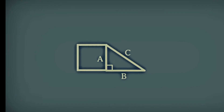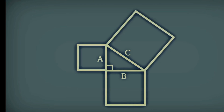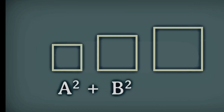Square of one side plus the square of the other side is equal to the square of the hypotenuse. In other words, A squared plus B squared equals C squared.